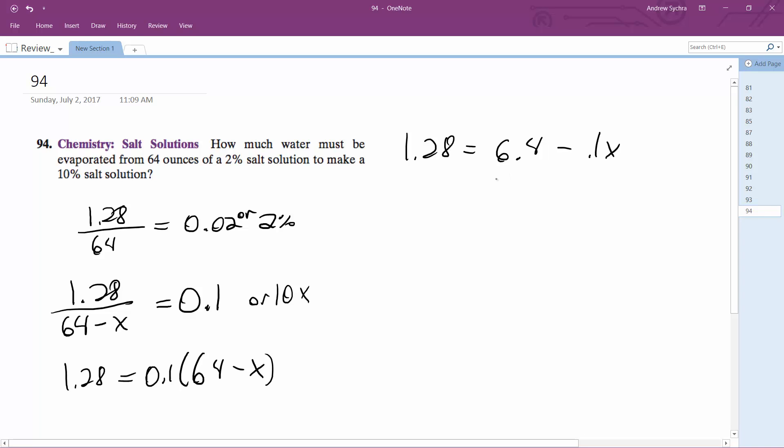So 1.28 minus 6.4, then divide by negative 0.1. I get negative 0.1x equals negative 5.12.